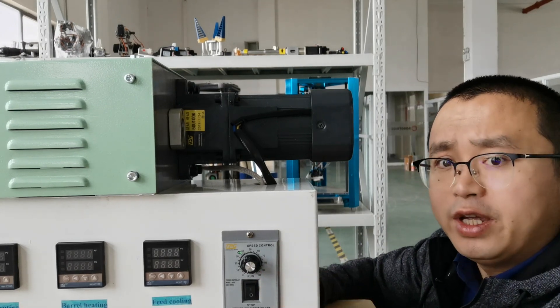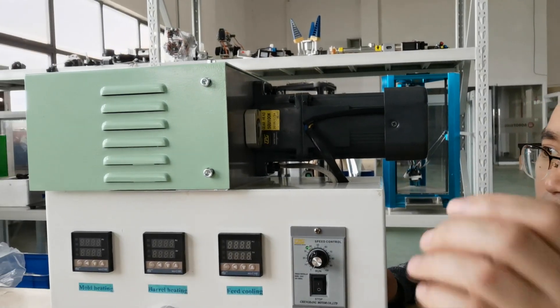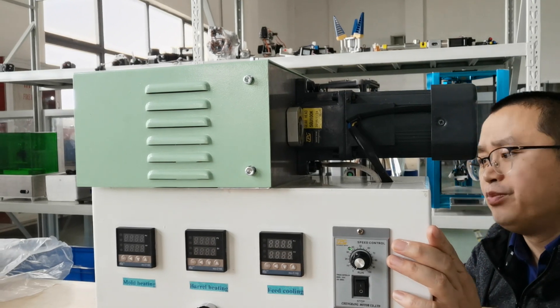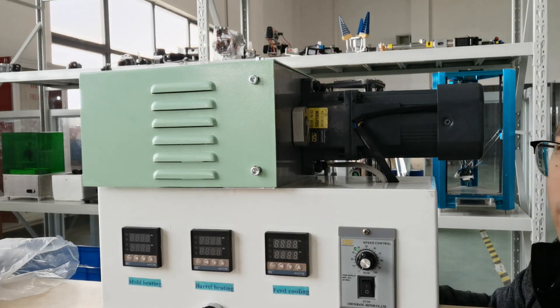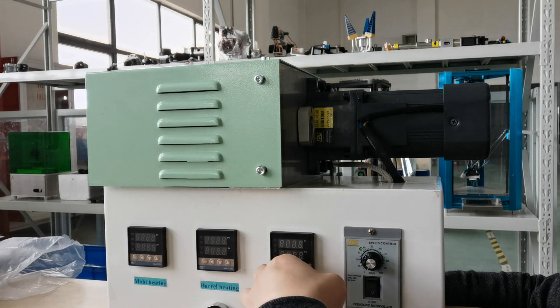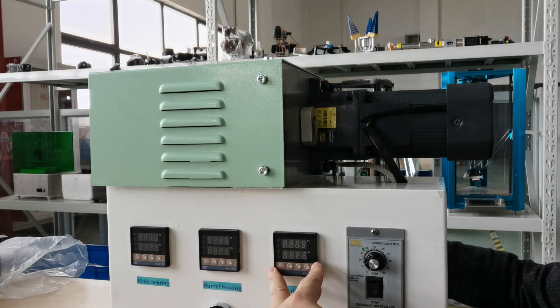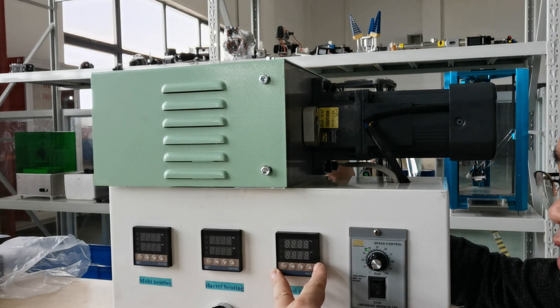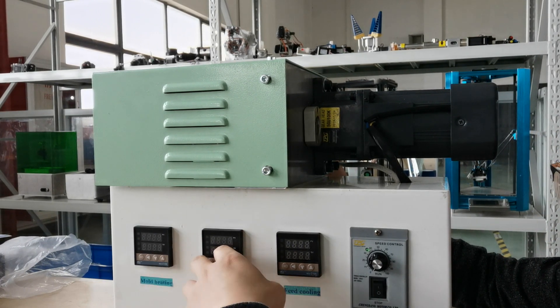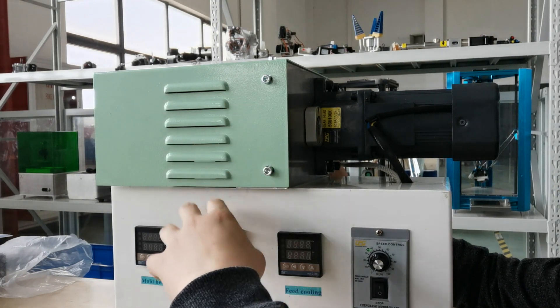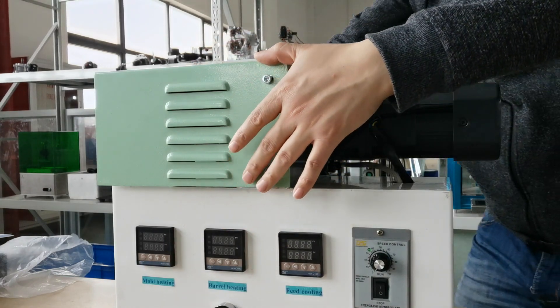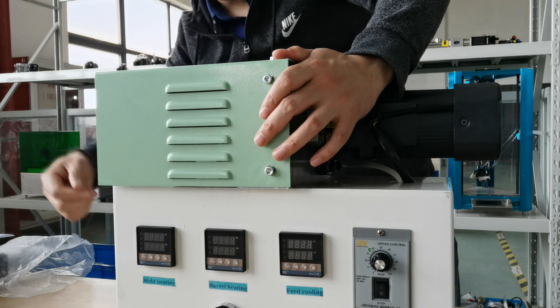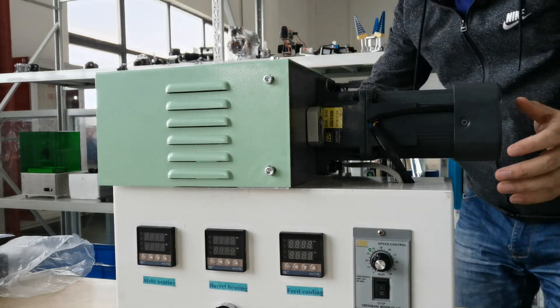Here you can see the SDS 20 parallel twin screw extruder which is 110 voltage. Let's check it out. You can see there are three heating zones and one zone for the cooling fan on the back, and another two: one for the extruder barrel and one is for the dye.